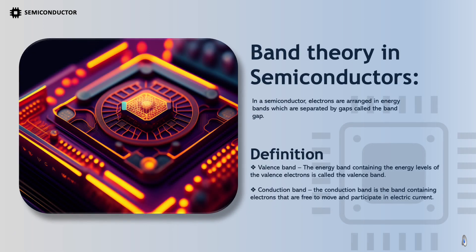Band theory in semiconductors: In a semiconductor, electrons are arranged in energy bands which are separated by gaps called the band gap. The valence band is the energy band containing the energy levels of the valence electrons. The conduction band is the band containing electrons that are free to move and participate in electric current.